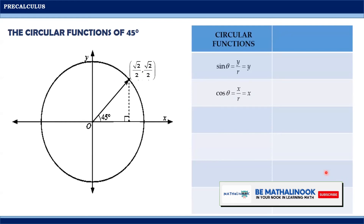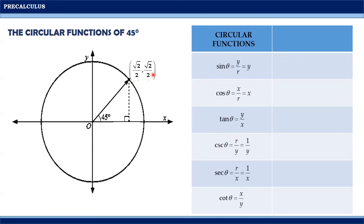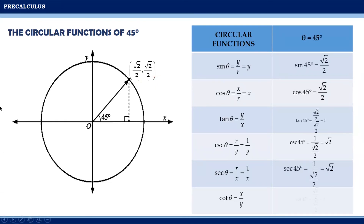With coordinates (√2/2, √2/2), the circular functions of 45 degrees are: sine 45° = √2/2; cosine 45° = √2/2; tangent 45° = (√2/2)/(√2/2) = 1, since the numerator equals the denominator; cosecant 45° = 1/(√2/2) = √2; secant 45° = 1/(√2/2) = √2; and cotangent 45° = (√2/2)/(√2/2) = 1.